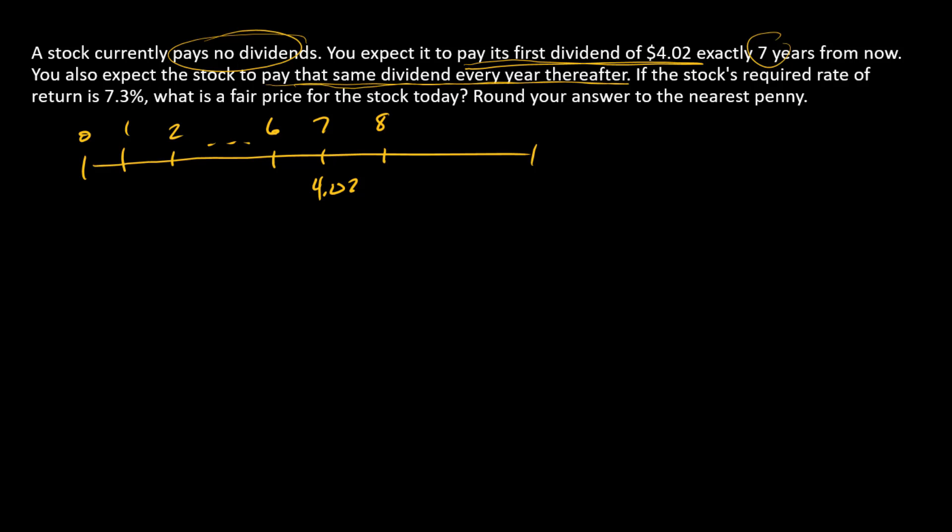And then another $4.02, and that's going to be constant forever. So we can immediately see we're dealing with a perpetuity, but it doesn't start until year seven.